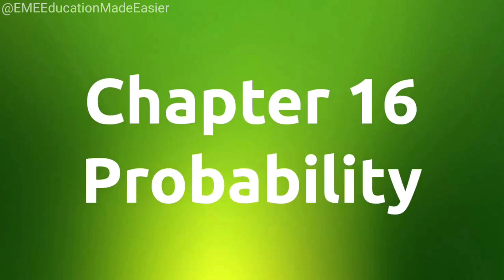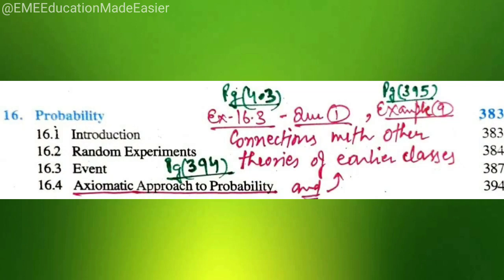Now, coming to chapter number 16, the last chapter, probability, axiomatic approach to probability and connections with other theories of early classes on page 394 has been deleted. Related to this, we have exercise 16.3 on page 403. Exercise 16.3 on page 403, question number 1 and example 9 on page 395. All have been deleted.